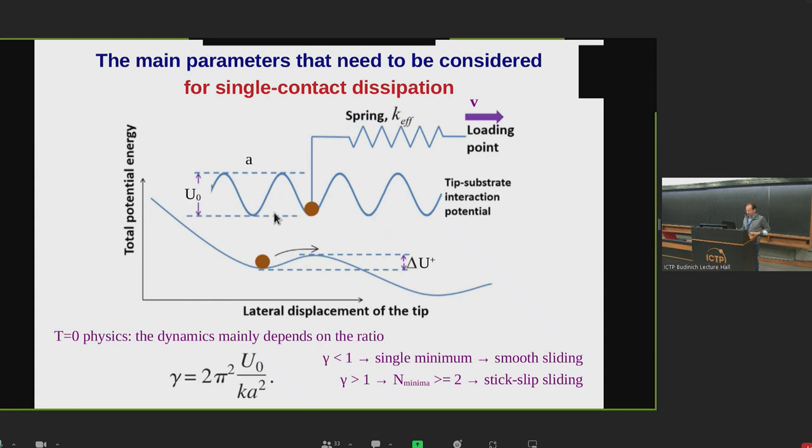At zero temperature, the situation is quite simple. There is essentially a single parameter, which is the ratio of the amplitude of the corrugation to an effective energy related to the spring constant. When this parameter is bigger than one, the total potential is a single minimum and the sliding is smooth. Everything is quite boring. Instead, the situation becomes more interesting when this gamma is greater than one, so the corrugation is dominating, and you have at least two minima. In that case, at zero temperature, you have a stick-slip regime.